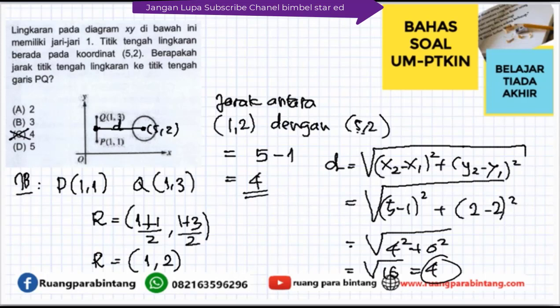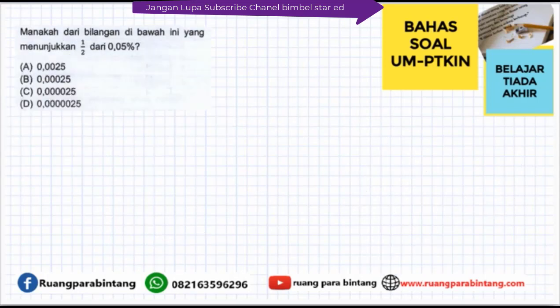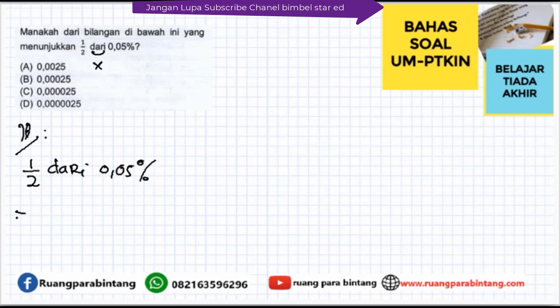Kita lanjut di soal nomor 2. Manakah dari bilangan di bawah ini yang menunjukkan setengah dari 0,05 persen? Pilihannya: 0,0025; 0,00025; 0,000025. Jadi kita coba jawab. Kata 'dari' artinya kali. Berarti setengah dari 0,05% = ½ × 0,05%. Kalau kita hitung, jadinya 0,05 dibagi 2 dibagi 100, berarti ada 5 angka di belakang koma.